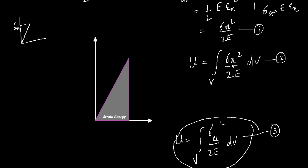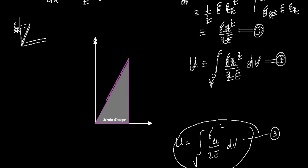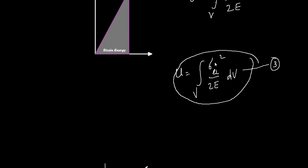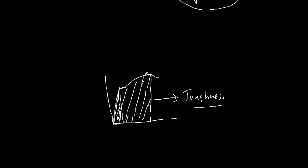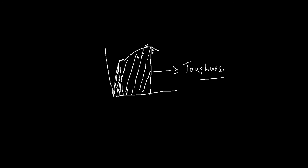If you apply the stress at the proportional limit in this equation, you get the material's ability to store or absorb energy without permanent deformation — this is called the modulus of resilience. Following the same analogy, the complete area under the stress-strain diagram up to fracture gives the total energy absorbed or dissipated.